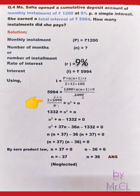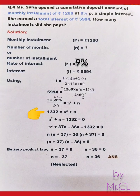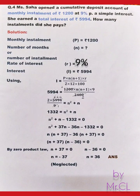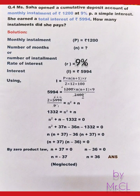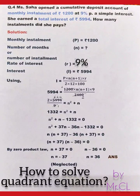5994 ÷ 9 = 666, and 666 × 2 = 1332. So 1332 = n² + n. Rearranging gives the quadratic equation: n² + n − 1332 = 0.